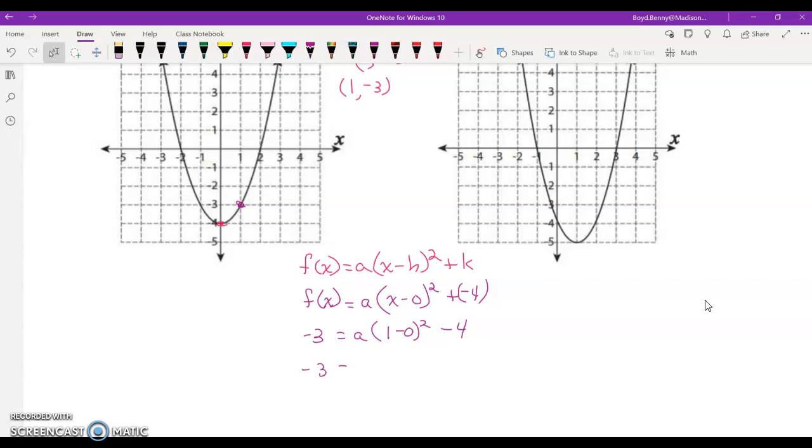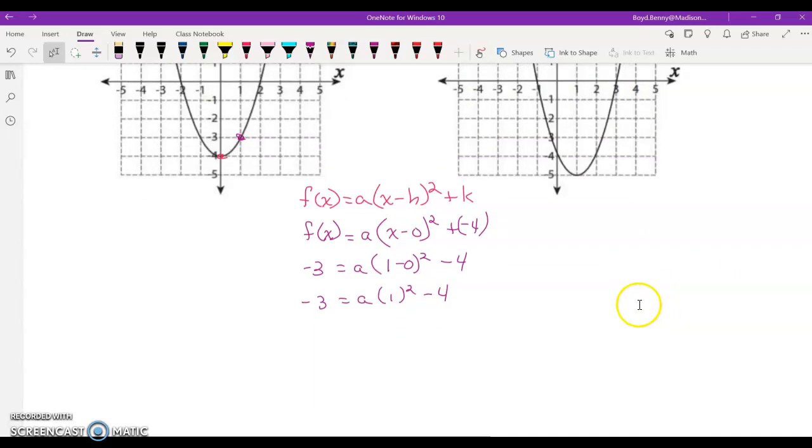Okay, so now I've got negative 3. Now, I'm going to solve this for a. Okay, negative 3 equals a times 1 squared minus 4. Let's go ahead and simplify that 1 squared since we have exponents. Let's do that next. Negative 3 equals 1a minus 4. 1 squared is just 1. Then we would simply add 4 to both sides. And, of course, 1a is just a. Negative 3 plus 4 is 1.